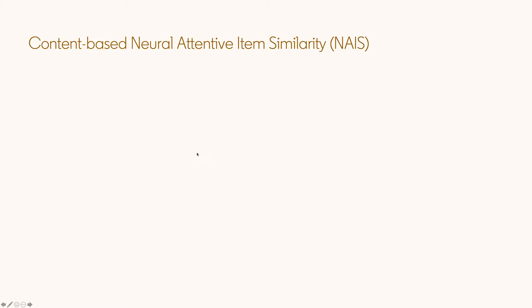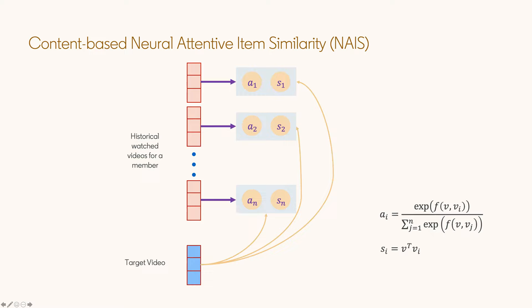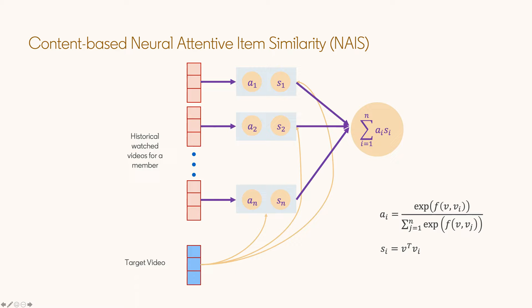For the NAIS method, let's elaborate further. We have collected historical watch videos for a member, denoted as V1, V2, and VI, and a target video V. For each pair of V and VI, we compute two terms: AI and SI. Here, AI is an attention term computed by a deep layer F correlating V and VI, followed by a softmax across all VI. The second term SI is a simple cosine similarity between V and VI. We then compute the final MVA score as the weighted summation of AI times SI over all the member history.